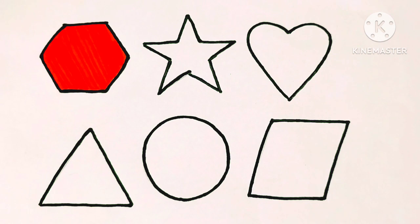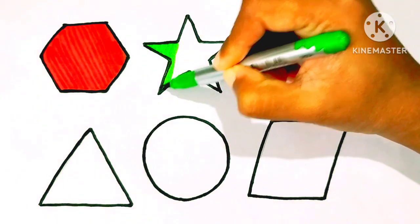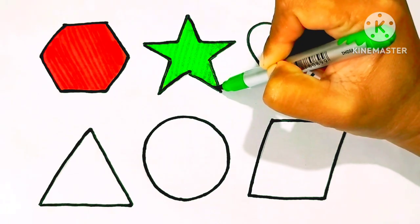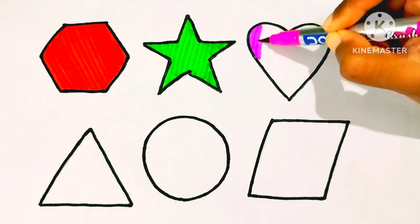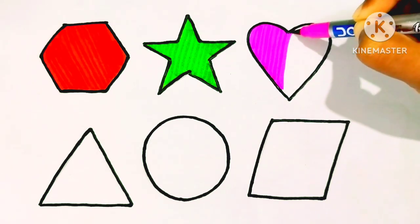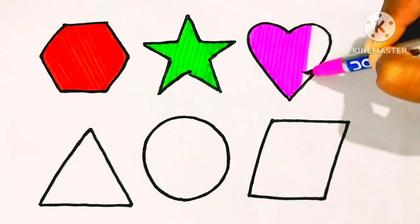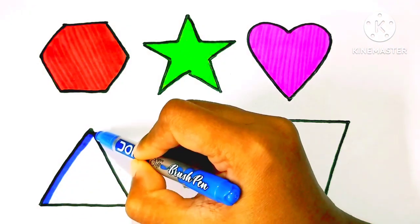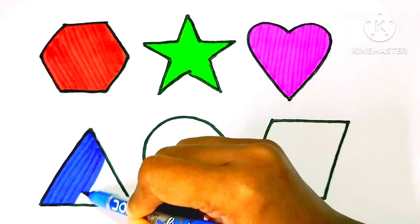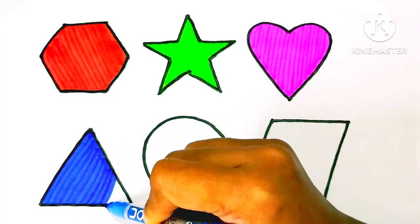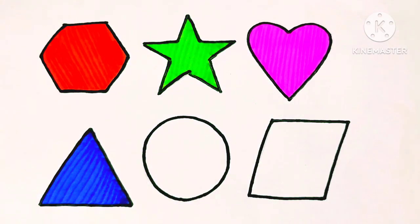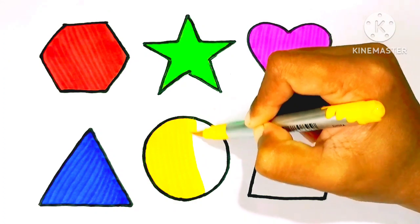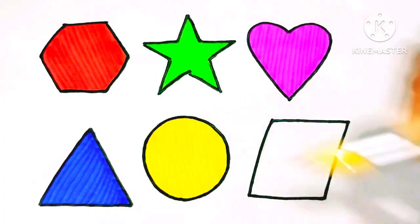Red Hexagon. Green. Star. Pink Heart. Blue Triangle. Yellow Circle.